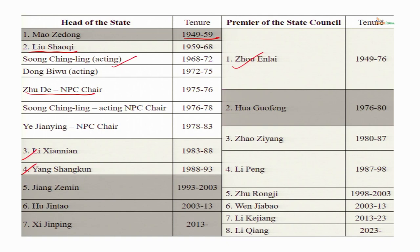Instead of Zhao Ziyang, Li Peng became the premier and remained premier for 11 years. Li Peng was also a princeling but was conservative. Under him the reforms initially went on the back burner. But after 1992, when Deng Xiaoping emphasized that reform should continue, reforms went back on track.